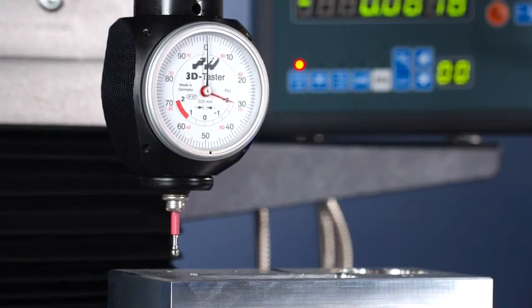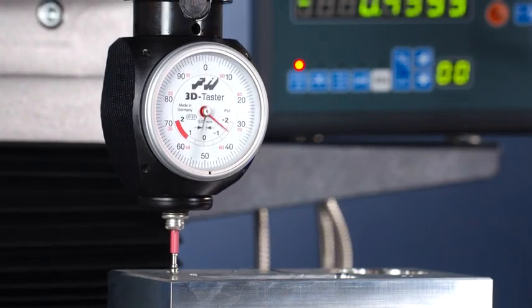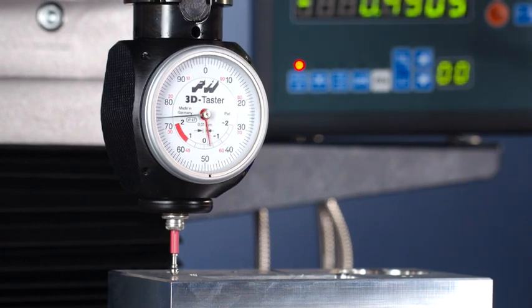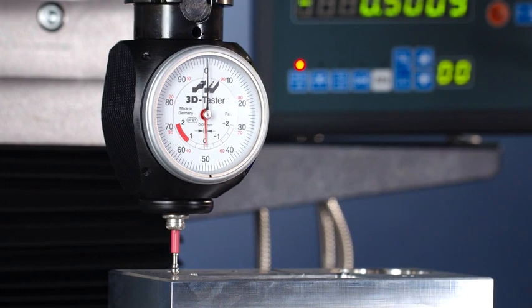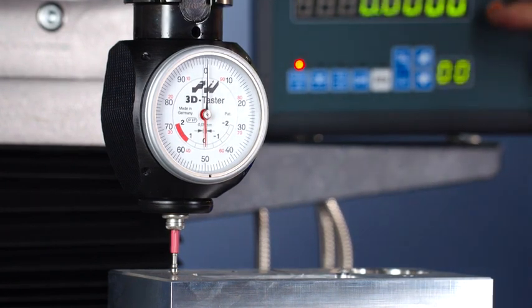With the HYMER 3D Sensor, measuring part features, like pocket depths, is quick and easy. To measure the depth of this pocket, simply touch the sensor off to the top of the surface until the black and red hands come to zero.